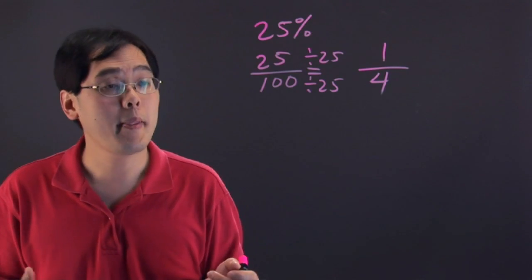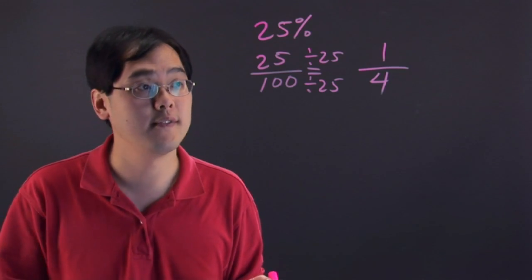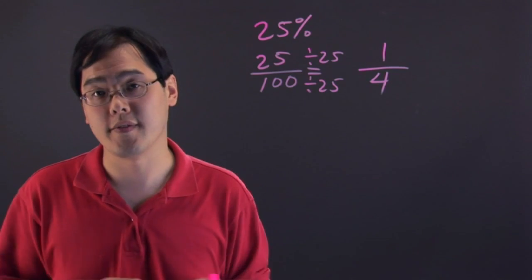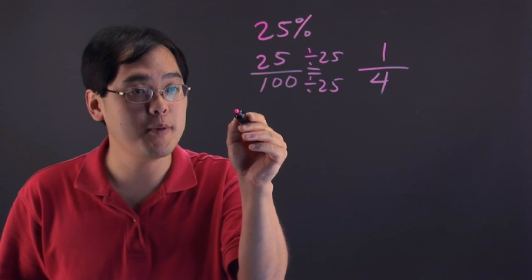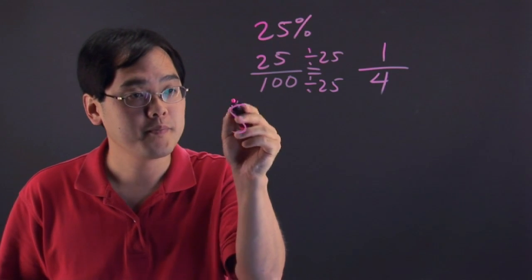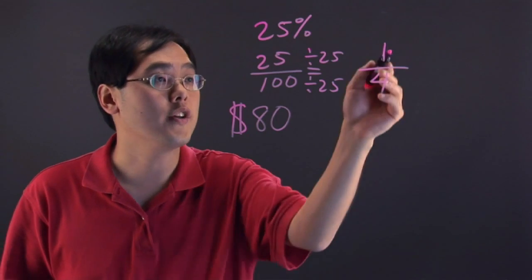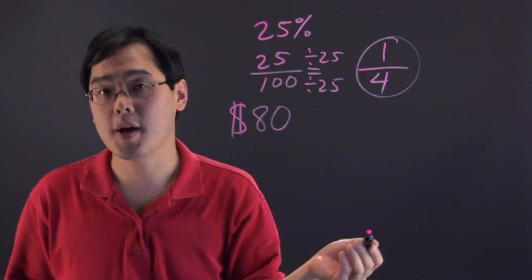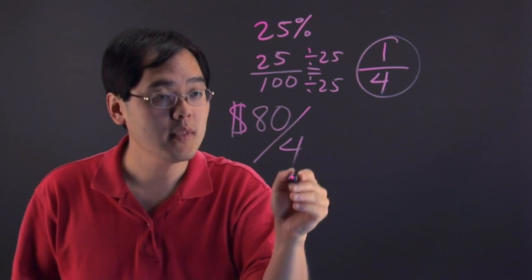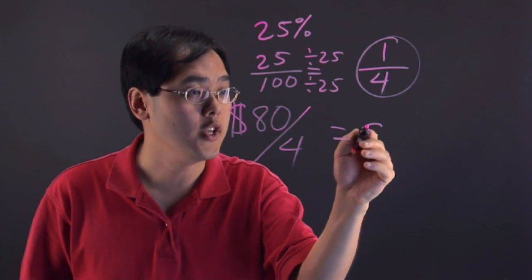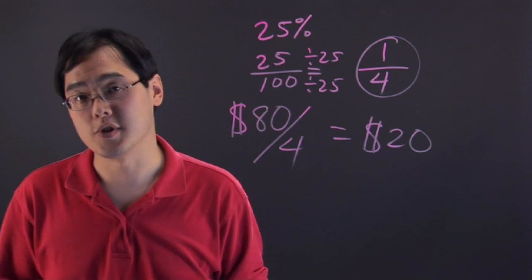So basically, depending on the price of the merchandise you have, just divide by 4 and you'll get the 25% off discount. For example, if you have something that's $80 at 25% off, all you need to do is either multiply by 1/4 or simply divide by 4 and you'll get $20, which is a pretty good deal.